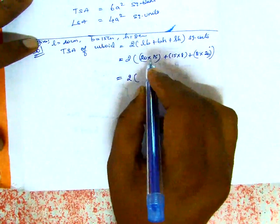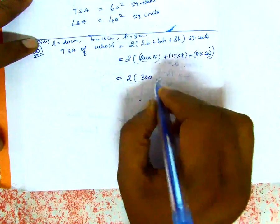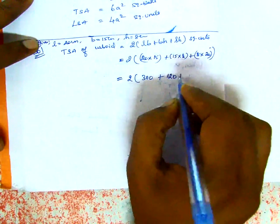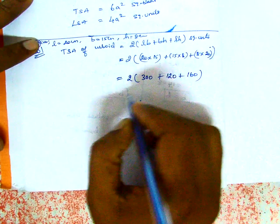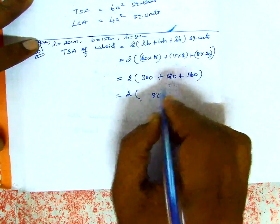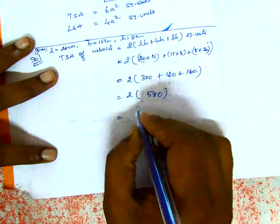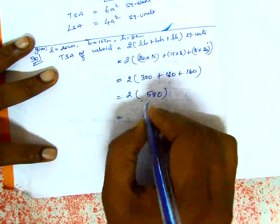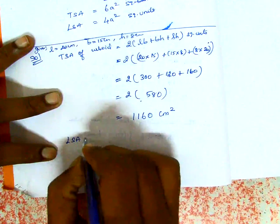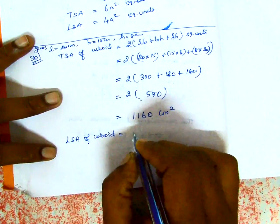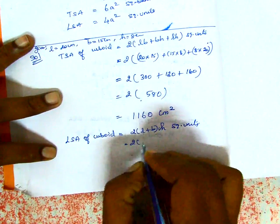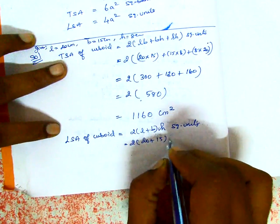Calculating: 20×15 = 300, 15×8 = 120, 8×20 = 160. Adding these: 300 + 120 + 160 = 580. Then 2 × 580 = 1160 cm². So the TSA of the cuboid is 1160 cm².